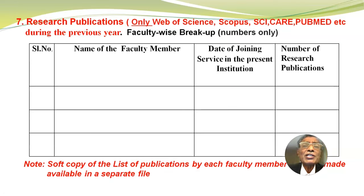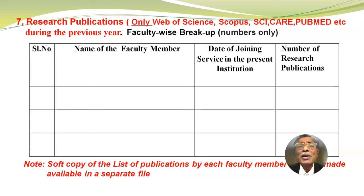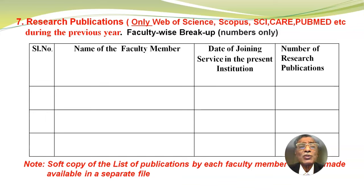Research publications: only Web of Science, Scopus, SCI journals, CARE, PubMed, etc., during the previous year. Faculty-wise breakup, numbers only, in the following format: serial number, name of the faculty member, date of joining service in the present institution, number of research publications.